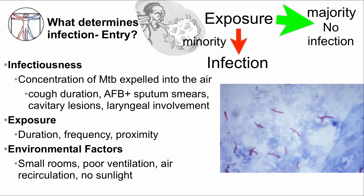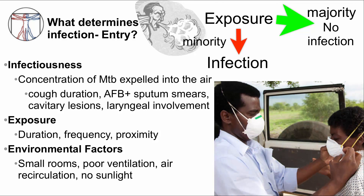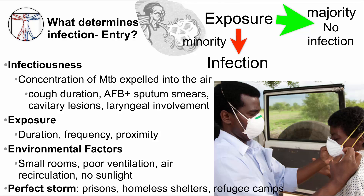As healthcare providers, we are at higher risk of exposure and infection to TB compared to the general population. This is why you will wear special masks when evaluating patients with TB infection. A typical mask looks like the one in the picture, which shows a child with TB being transported to another hospital; both the doctor and the patient are wearing these masks. This is also why prisons, homeless shelters, and refugee camps are high-risk situations for TB infection. Sunlight is actually helpful because through evolution, MTB lost its protection against UV light in contrast to other mycobacteria.